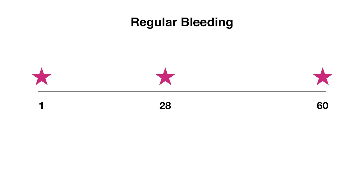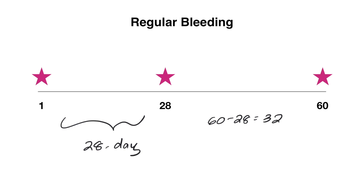Here we're looking at a 60-day interval assessing cycle length. The stars indicate the onset of a menstrual cycle and cycle length is the time from one period to the next. Menses occurs on day one and again on day 28 — a 28-day cycle length. The third period occurs on day 60, giving a 32-day cycle. The variation between 32 and 28 is four days, which is within normal limits.